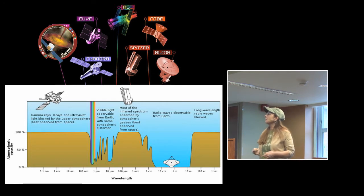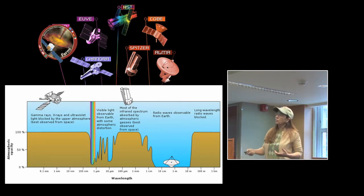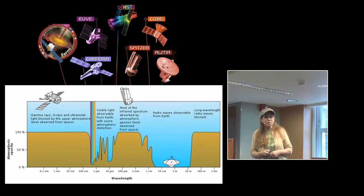Most of the infrared has to be done from space. A lot of the radio waves are observable from ground-based telescopes, but the very long wavelength radio waves have to be above the atmosphere.